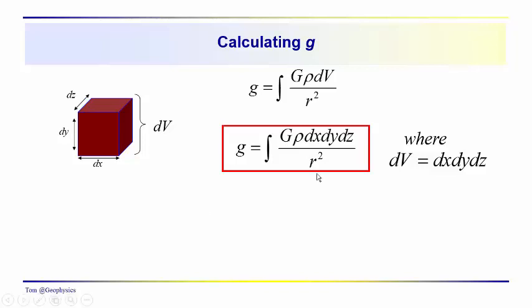In this video we're going to derive the acceleration due to gravity of a vertical cylinder and also the infinite plate. We're going to take an approach which is probably a little bit different than you've run into in textbooks. Instead of Cartesian coordinates, we'll use cylindrical coordinates.